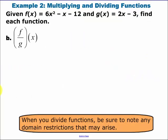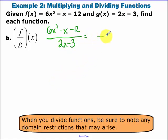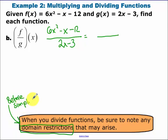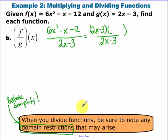Now dividing: we have our f of x function 6x squared minus x minus 12, divided by 2x minus 3. We need to state any domain restrictions, and that domain restriction happens before you simplify — keep that in mind. So 2x minus 3 is the denominator. I'm going to try to factor the top, and I'm going to guess that one of my factors is going to be what's on the bottom.